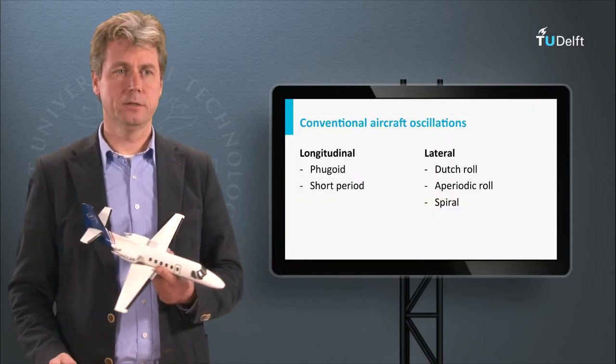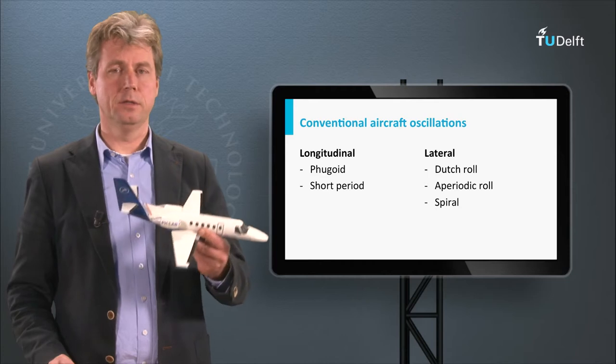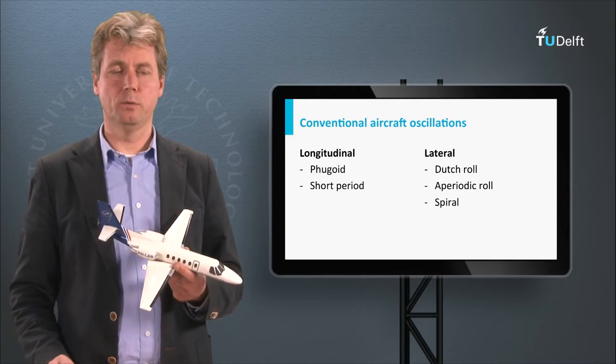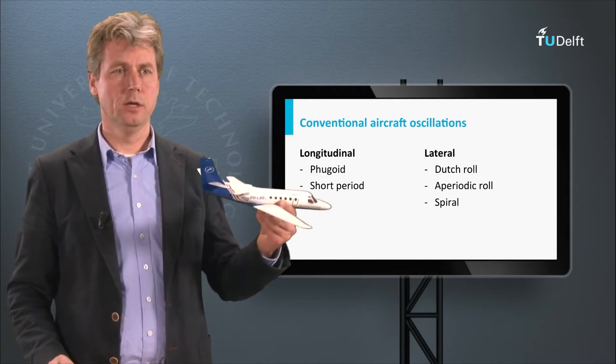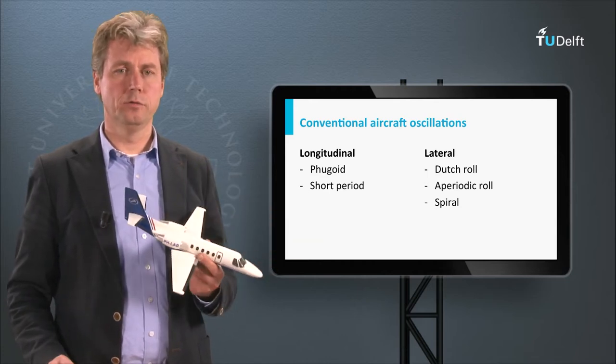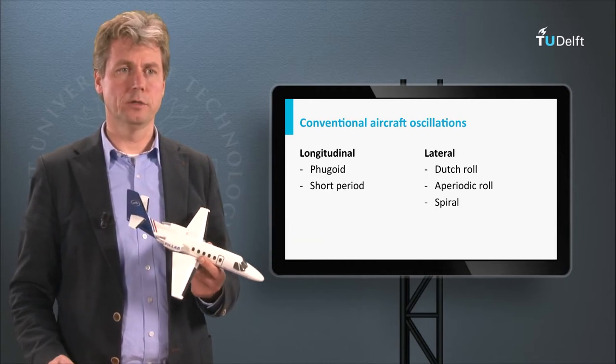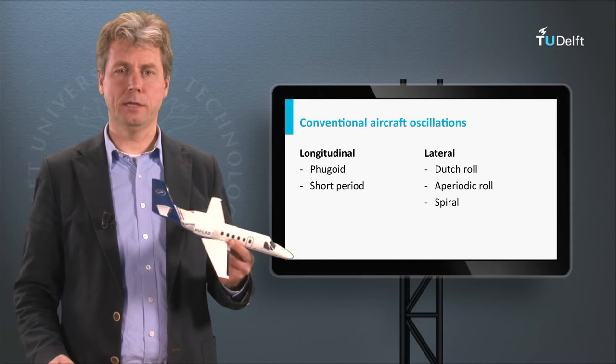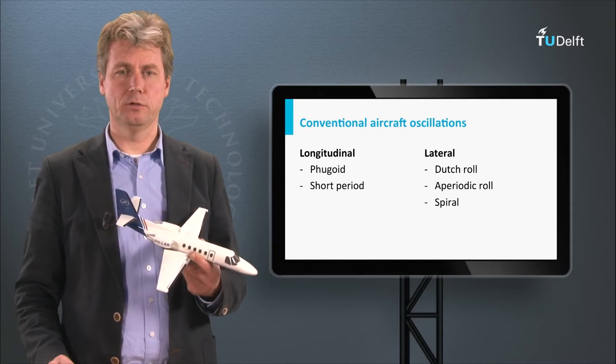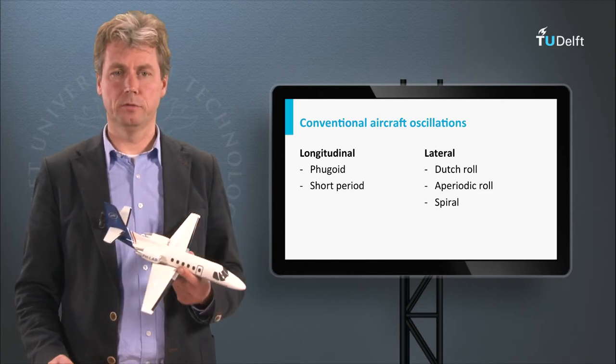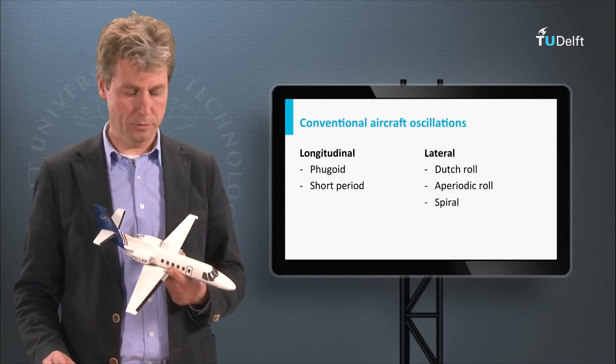These are the ones that we will discuss: two longitudinal ones — the fugoid and the short period — and laterally the Dutch roll, aperiodic roll, and the spiral.